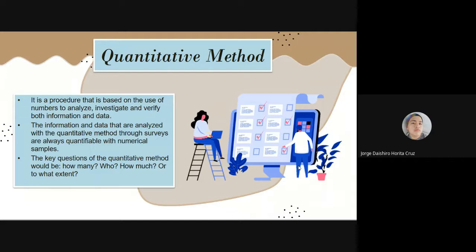The quantitative method is a procedure that is based on the use of numbers to analyze, investigate, and verify both information and data. That is, quantitative research is a decision procedure which tries to analyze and delimit the association, the generalization, and the object of research obtained when studying a population. The information and data that are analyzed with the quantitative method through surveys are always quantifiable with numerical samples.